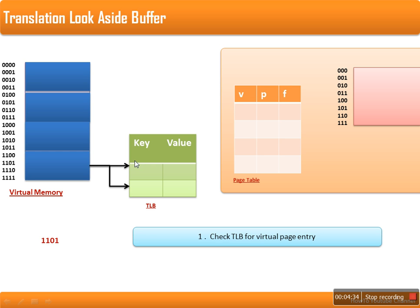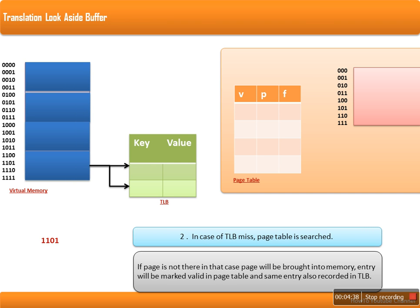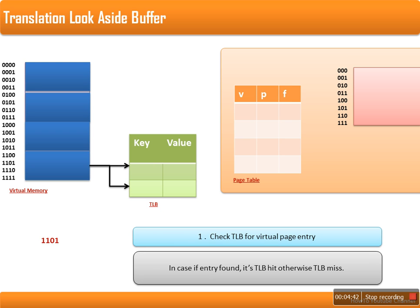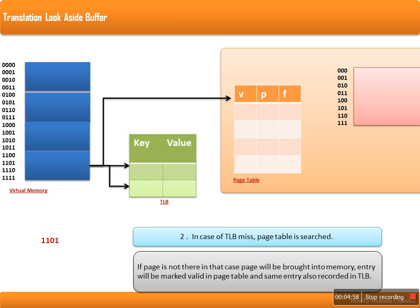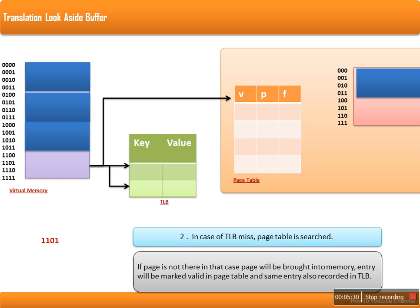Whenever there is a TLB miss, it will next fetch the page table. First, check the TLB for the virtual page entry — if found, it is a TLB hit; otherwise it is a TLB miss. In case of a TLB miss, the page table will be searched. In the page table, the entry for this page number may also be invalid, since no pages are currently available in RAM. All pages are marked invalid. The corresponding page is not available — this is known as a page fault.